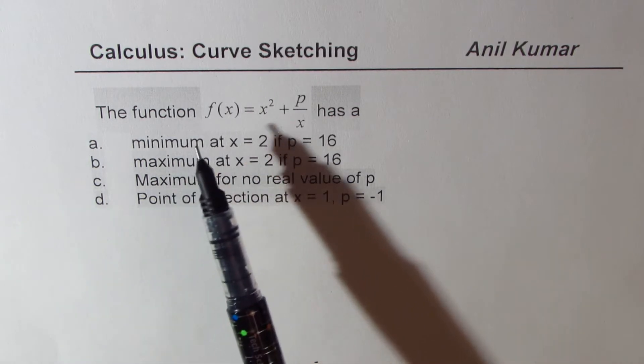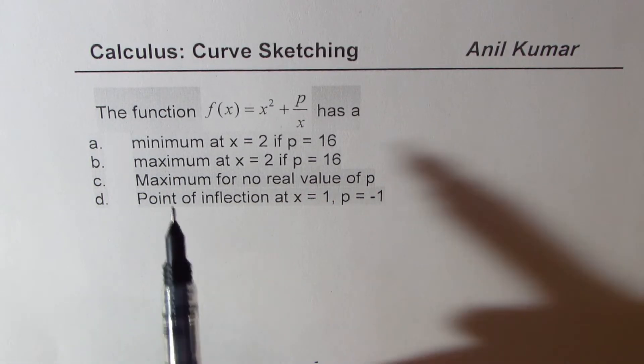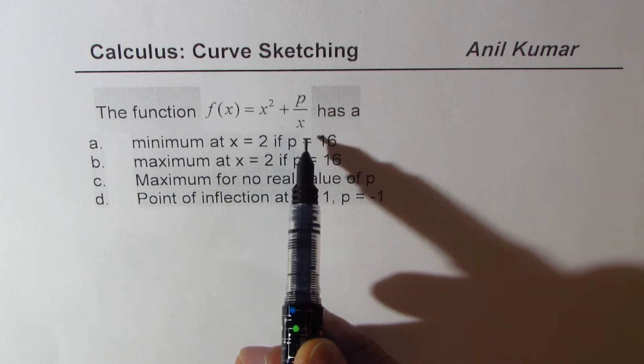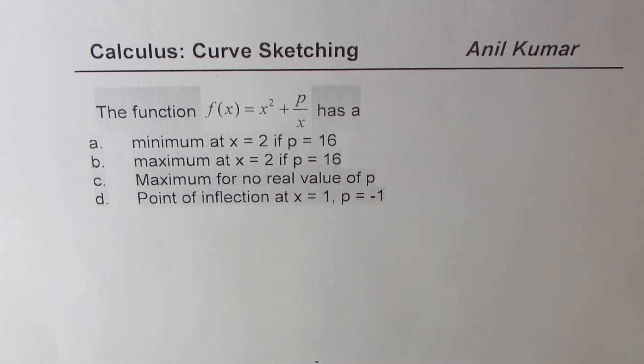We are given that the function f(x) equals x squared plus p over x, and then we are given four options. The function has a minimum at x equals 2 if p equals 16, maximum at x equals 2 if p equals 16, maximum for no real value of p, and fourth option is point of inflection at x equals 1. So basically, we are looking for maximum, minimum, and point of inflection.